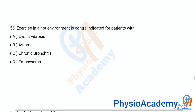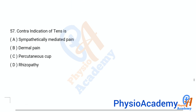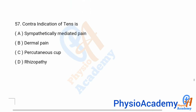Question 56: Exercise in a hot environment is contraindicated for the patient with — Option A: cystic fibrosis. Option B: asthma. Option C: chronic bronchitis. Option D: emphysema. The correct answer is option A, cystic fibrosis.